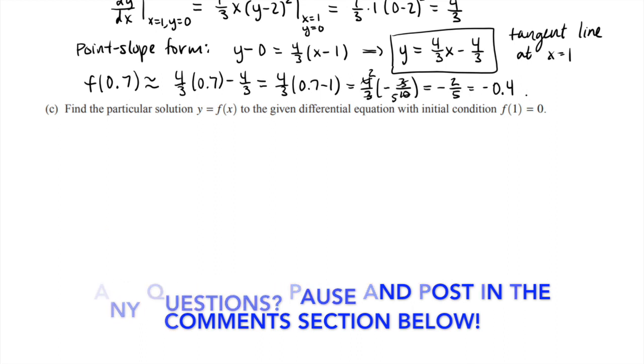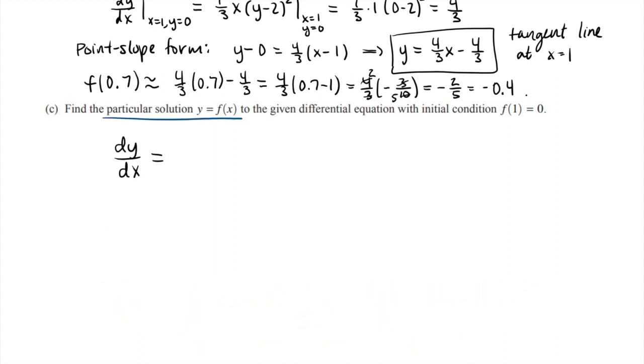And now Part C says find the particular solution y equals f(x) to the given differential equation with the initial condition f(1) equals 0. All right, so let's start by writing out our differential equation. Notice this didn't happen until Part C. This is typically the case with differential equation problems—you usually do not have to actually find the solution curve until the last part.